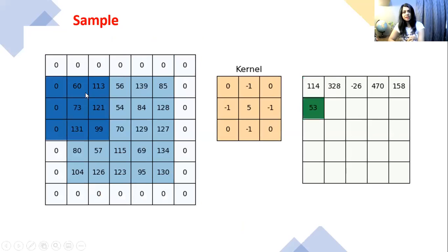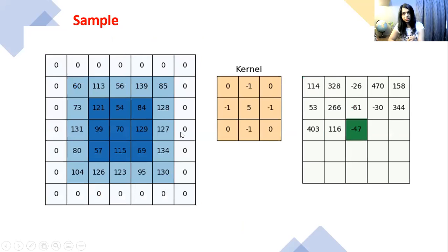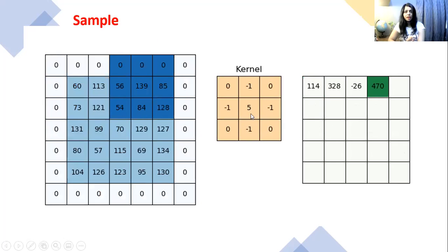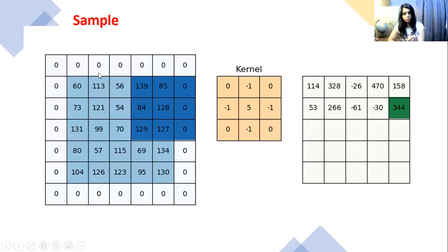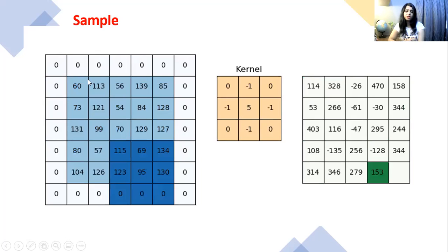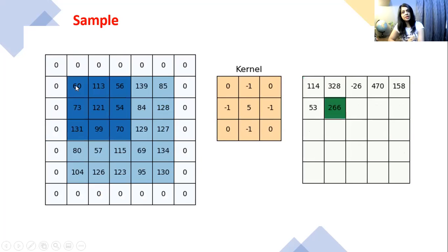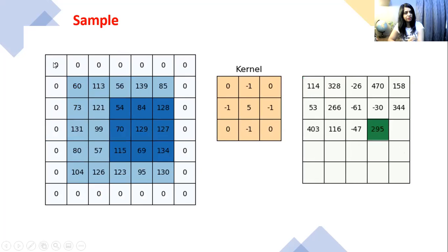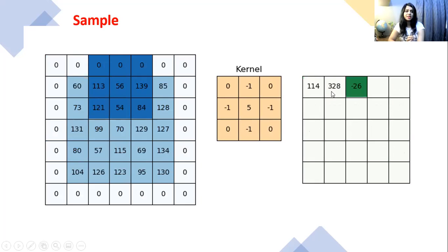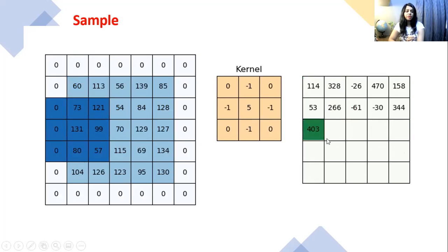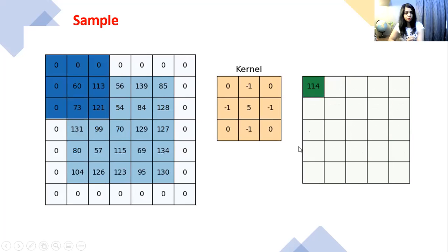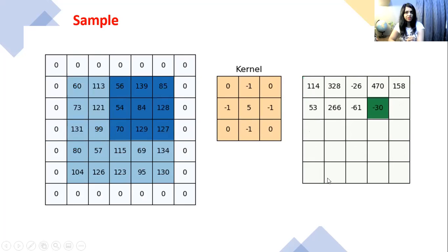Here is a sample showing an image padded with all zeros around it. With a given kernel, every time we put it at a particular position and convolve it with the image values — calculating the sum of products — we replace the central pixel, for example replacing 60 with the new value 114. We then shift the mask right and replace the next value, for example 113 becomes 328, and so on. The output and input image sizes remain the same.